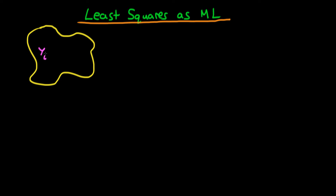There is some sort of process which determines yi, and I'm going to assume, for sake of argument, that it's determined by a single explanatory variable xi times some sort of constant beta plus some error term epsilon_i. Note that I've left out the intercept term, which we often see in linear regression, but it doesn't change anything in terms of the analysis I'm about to do.